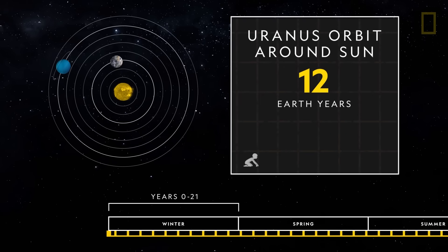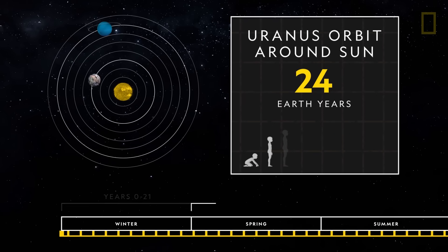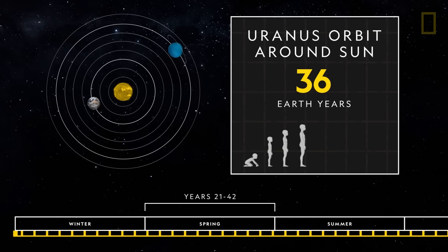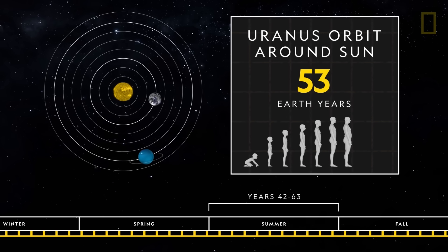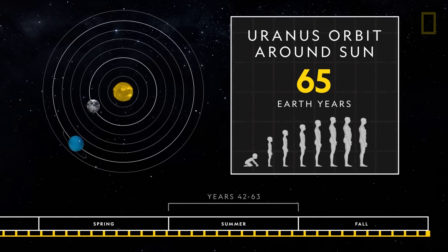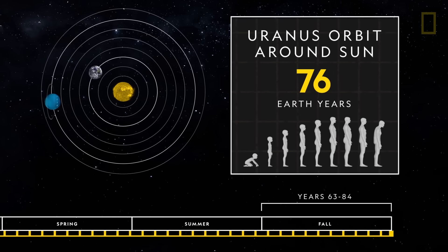This orbit causes each season of Uranus to last that much longer. Theoretically, a human living on Uranus would experience the four seasons only once, but each for about 21 years.